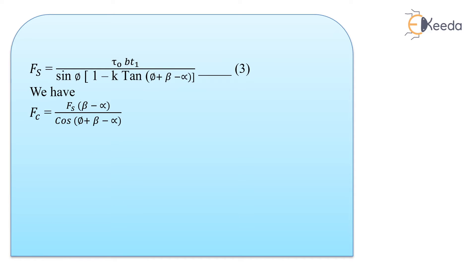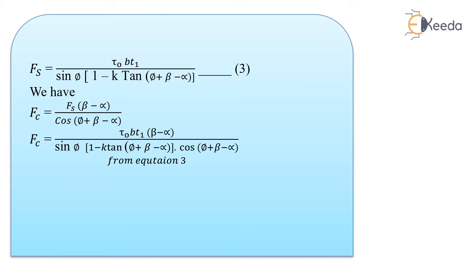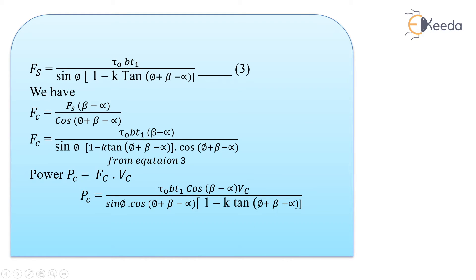We know Fc equals Fs into cos(beta minus alpha) divided by cos(phi plus beta minus alpha). Substituting the value of Fs into this gives us Fc, and since power equals Fc into Vc, multiplying this entire equation by Vc gives the cutting power Pc. Once again, power is a function of phi, appearing only in the denominator.